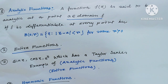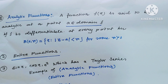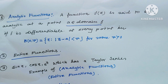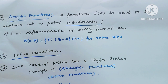Analytic function means — as seen in my previous video — a function f(z) is said to be analytic at a point a, where a belongs to the domain of the function, if f is differentiable at every point of the ball containing a, such that B(a, r) = {z : |z - a| < r} for some r > 0. When a function is analytic in the whole complex plane, it is called an entire function.